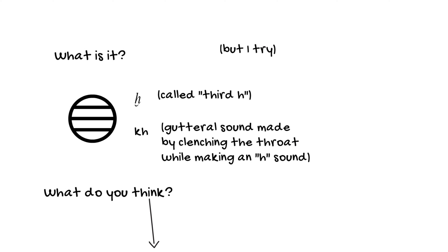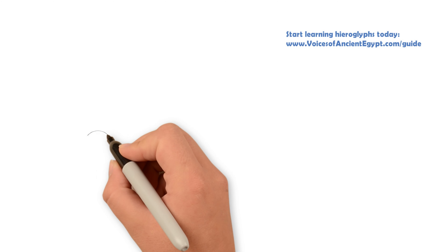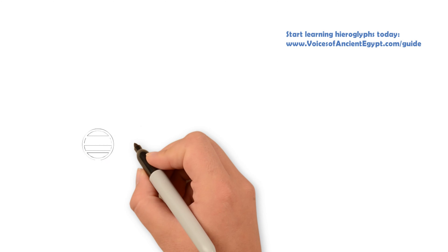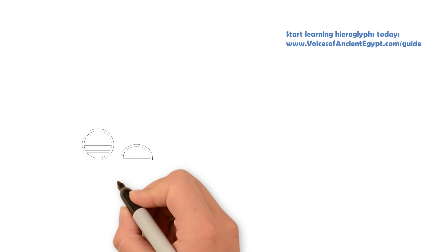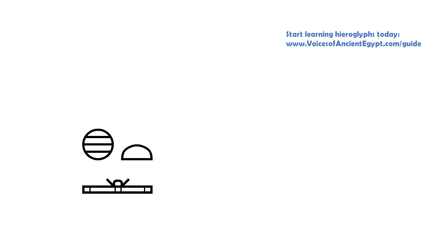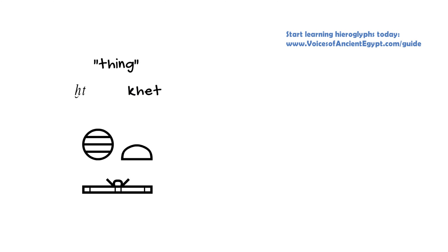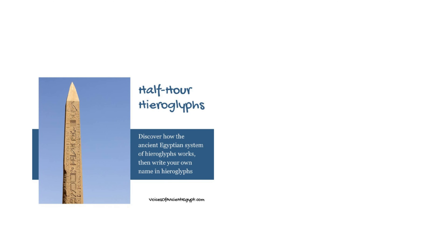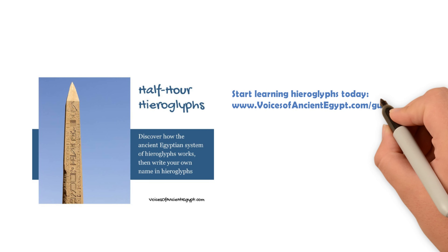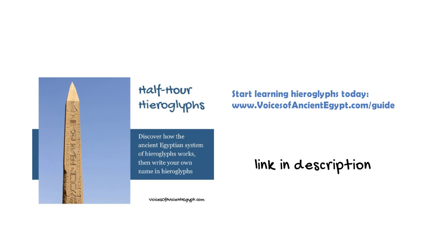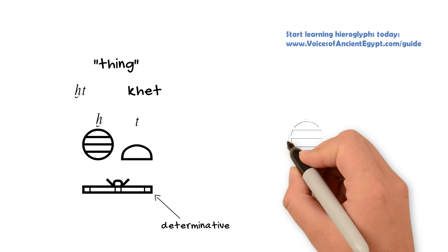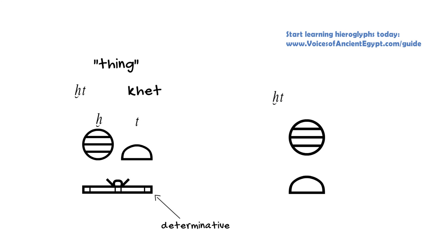So because this is a one-consonant sign, like many others we've seen, that means it's extremely versatile and it can appear in many words. One really common word where you'll see this is the word 'chet', which means thing or things — it can be both the singular or the plural. It's often written with this bookroll determinative. If you're not familiar with what a determinative is, I suggest you pick up my half-hour hieroglyphs guide — I'll pop the link for that in the description for you.